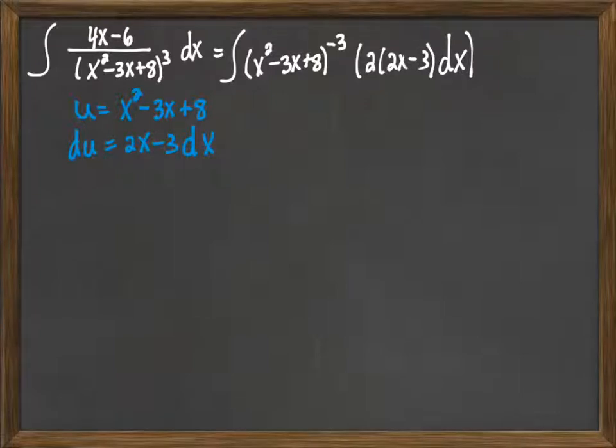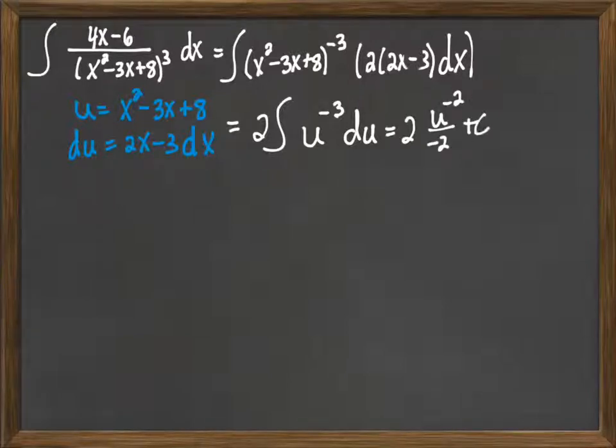So I have exactly what I need to be able to carry the substitution through. That other 2 now can be pulled out front, so I have just u to the minus 3rd, and then du is replacing that 2x minus 3 dx. So I can take the anti-derivative of u to the minus 3rd, add 1 to the exponent, and then divide by it.